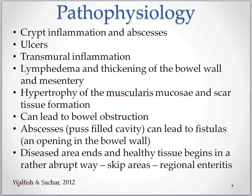Crohn's disease often begins with crypt inflammation and abscesses, which then turn into ulcers. Since the intestinal crypts are affected, this disrupts the work of the stem cells. Because the inflammatory response doesn't turn off, the ulcers get worse and grow bigger. Inflammation then spreads through the full thickness of the intestine — this is called transmural inflammation.